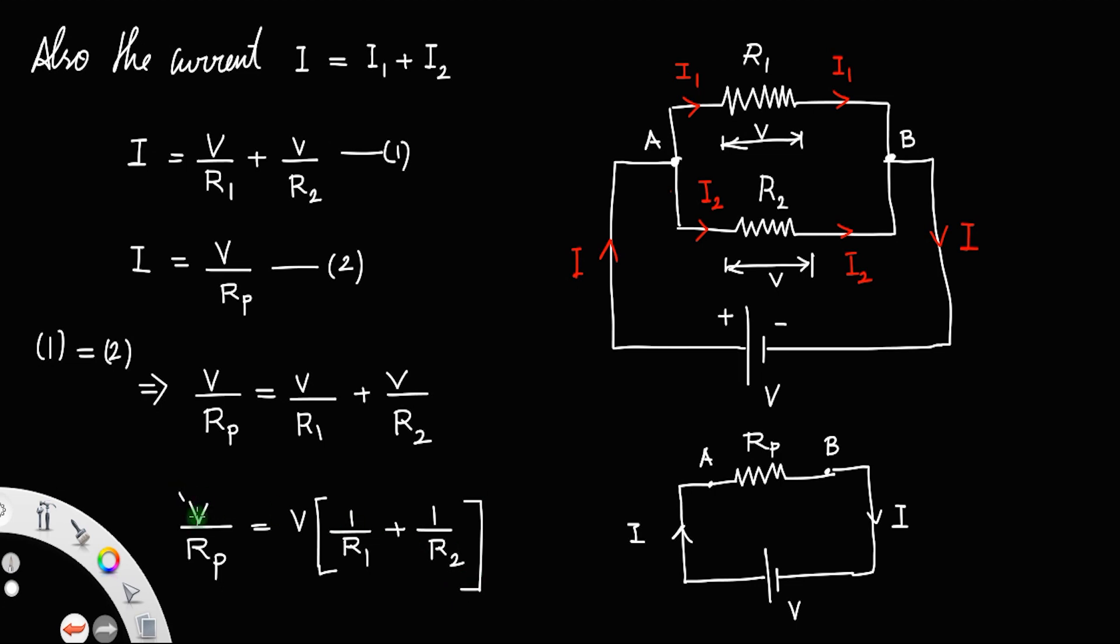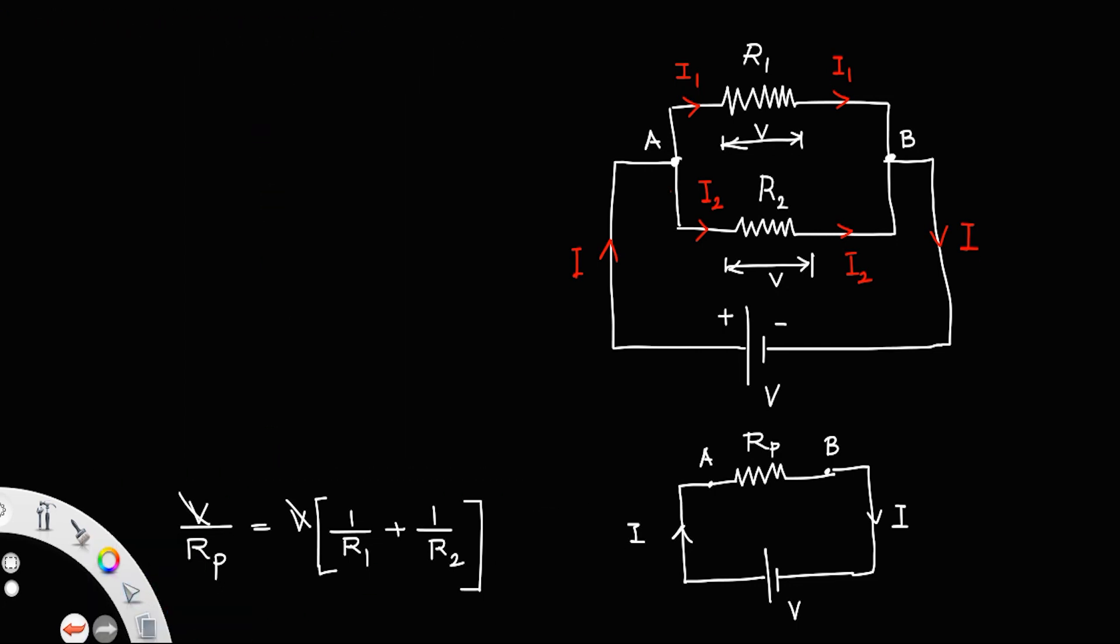You can cancel this V, so that the equation will become 1 by Rp. Rp represents the parallel. The reciprocal of the effective resistance in parallel combination is equal to sum of the reciprocal of the individual resistances.